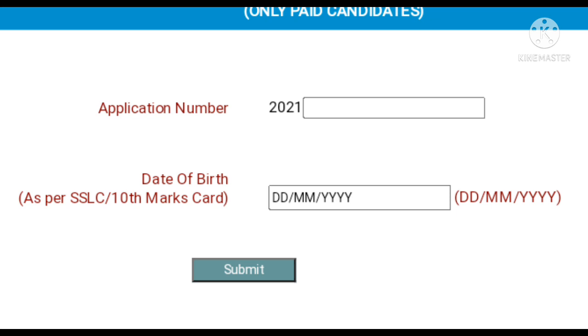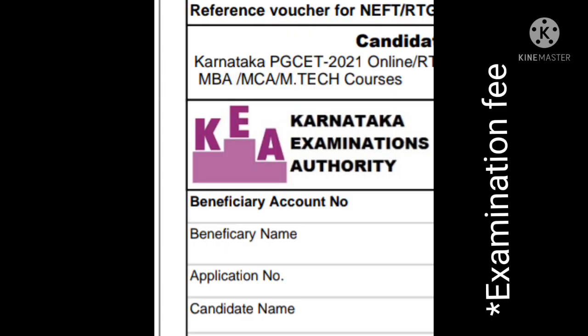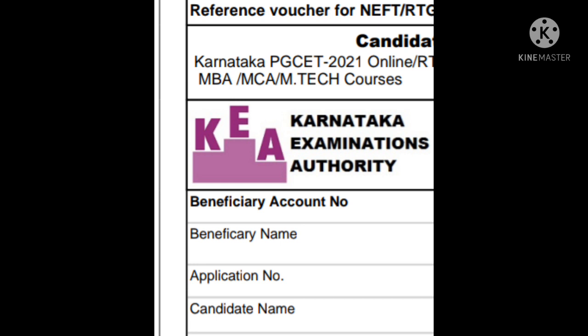Now, suppose you have forgotten your application number — you can find it in two ways. Either you can find it in your application form, or you can find it in the challan from when you paid your examination fee. Your application number would have been provided there.